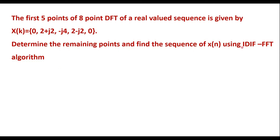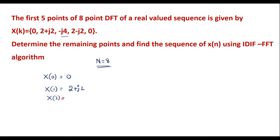The inverse DIF or DIT FFT algorithm can be used to convert the X(k) sequence into x(n). Here N equals 8, but only 5 samples are given. So X(0)=0, X(1)=2+j2, X(2)=-j4, X(3)=2-j2, and X(4)=0. Three samples are missing — X(5), X(6), and X(7) — which we need to calculate first.